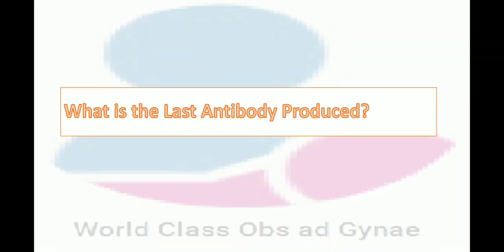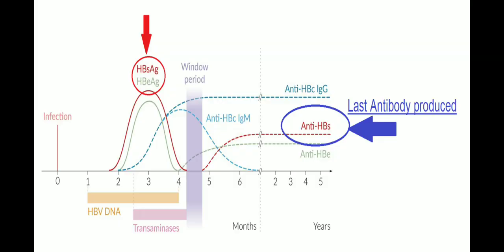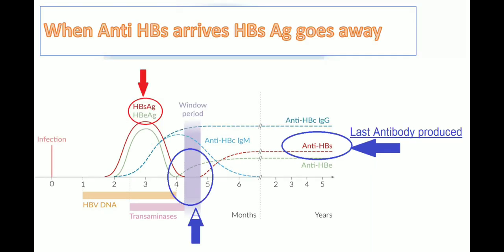The last antibody produced is anti-HBs. You can see from this figure: HBs antigen, HBe antigen, then anti-HBc, then anti-HBe, and finally anti-HBs. Anti-HBs arises when HBs antigen goes away — in the same way as we discussed for E antigen. When S antigen goes away, anti-HBs arrives.